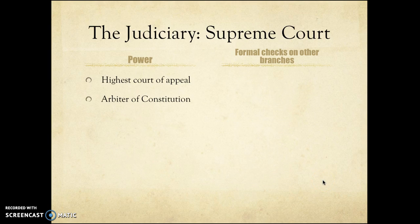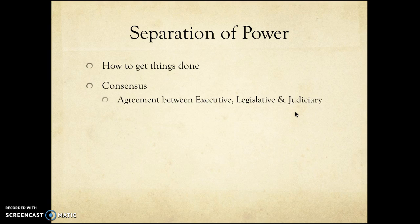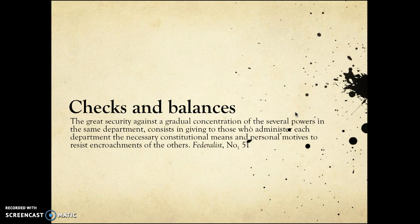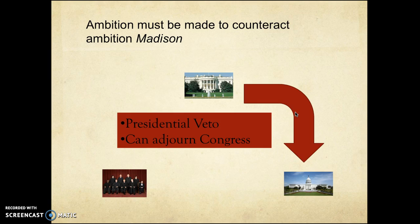The judiciary's specific powers don't look like much on paper, but they effectively make it the most powerful branch, because there is nothing that the executive or the legislature can do unilaterally to challenge a judicial decision. So if we separate power and have checks and balances, in order to get anything done we need consensus — agreement between the three branches. That was designed to ensure that anything the state did was fit and proper. But that has somewhat been hijacked by partisan and polarized politics, resulting in gridlock.